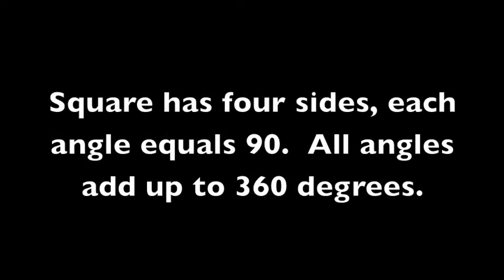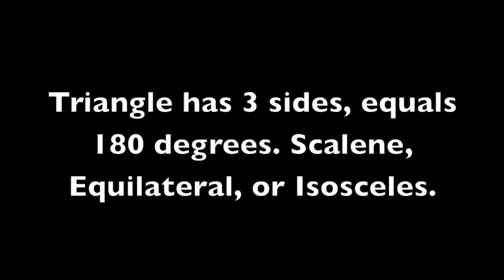A square has four sides, each angle is 90 degrees. All angles add up to 360 degrees. Yes, it's a square. A triangle has three sides.